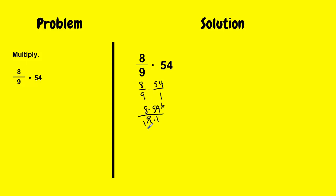And now I have the new problem 8 times 6 over 1 times 1, which simplifies to 48 over 1. And when you reduce that, it's just 48. So 8 over 9 times 54 has a final answer of 48.